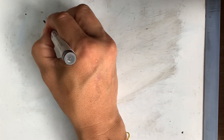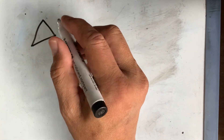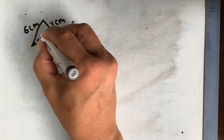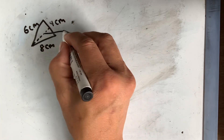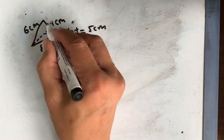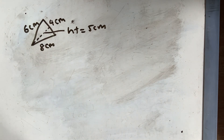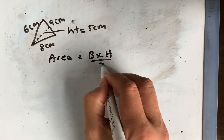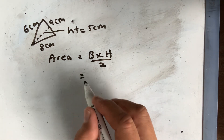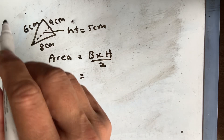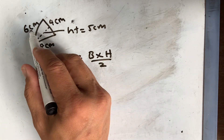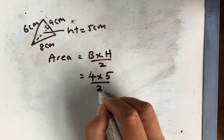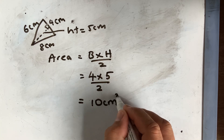Now let's do another example where the triangle looks the other way around. The area is always base times height divided by 2. If the height is 5, the base must be 90 degrees to the height. In this case it cannot be 6 or 8, so the base has to be 4. Therefore, it will be 4 times 5 divided by 2, and the answer is 10 cm squared.